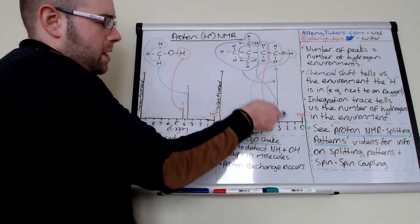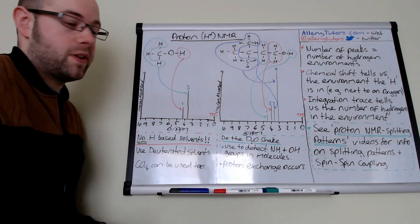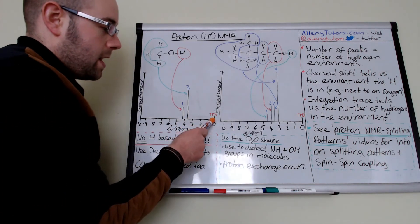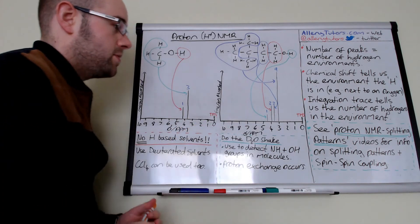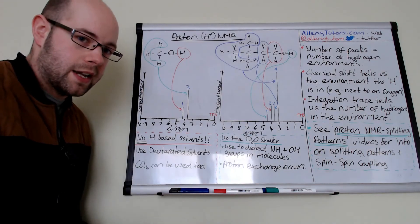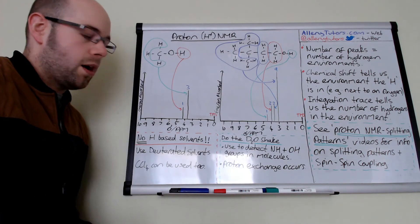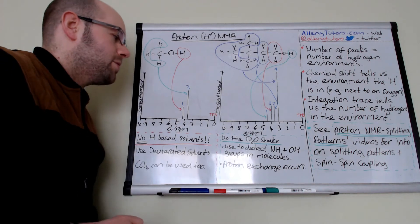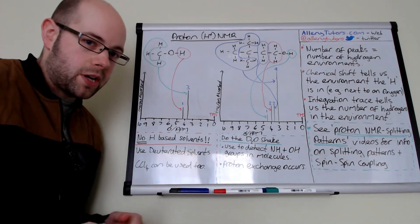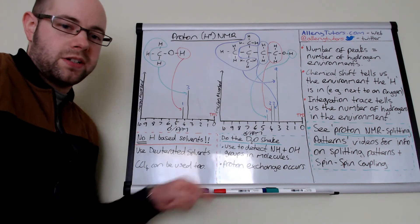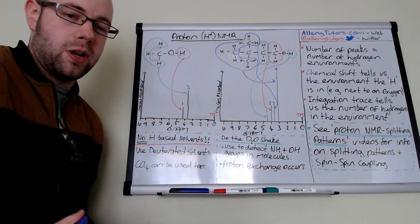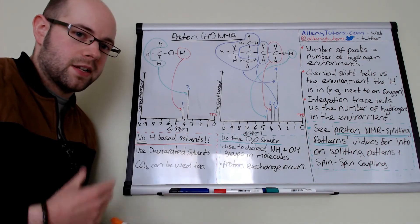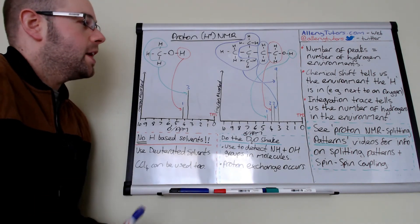So it appears at about the 3 ppm mark. You can also see we have a peak at zero — this is because of tetramethylsilane (TMS). If you're not sure what tetramethylsilane is, there is a video on carbon-13 you can look at — just click on the link below to find out what TMS is and why it's used.